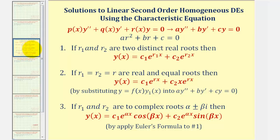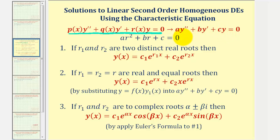Let's begin with a review. A linear second order homogeneous differential equation must fit this form here, and if the coefficients are not functions of x but constants, the differential equation fits this form here, where a, b, and c are the constant coefficients. We use the values of a, b, and c to form the characteristic equation, which is this quadratic equation: a r squared plus b r plus c equals zero. The types of solutions to this equation determine the form of the general solution.